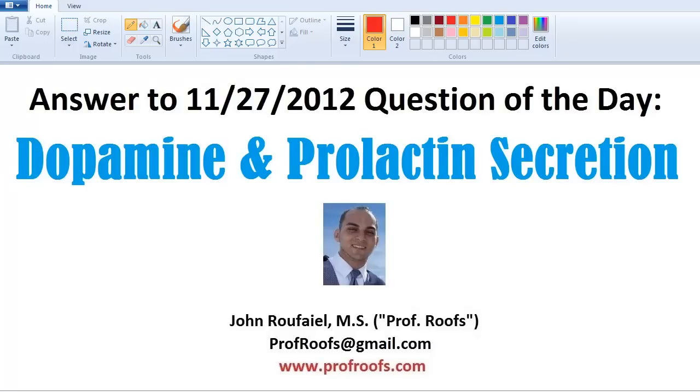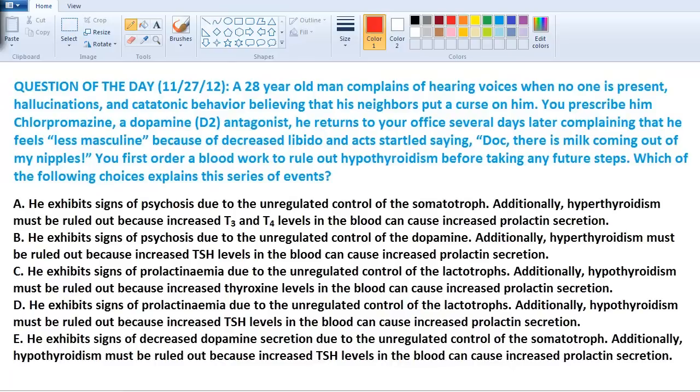Here is yesterday's answer dealing with dopamine and prolactin secretion. A 28-year-old man complains of hearing voices, hallucinations, and catatonic behavior. He's definitely out there a little bit. You prescribe him chlorpromazine. Anytime you hear an azine, that means it's a dopamine antagonist.